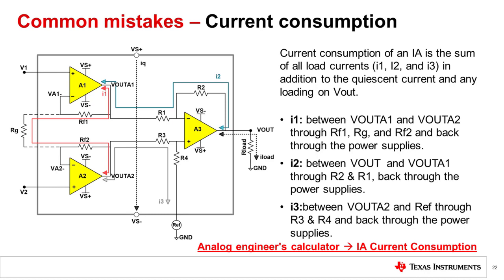Here is a diagram of all the currents in a typical 3-amp IA. Current I1 is the current flowing between Vout1 and Vout2 through RF1, RG, RF2, and back through the power supplies. Current I2 is the current flowing between Vout and Vout A1 through R2 and R1 and back through the power supplies. Current I3 is the current flowing between Vout A2 and reference through R3 and R4 and back through the power supplies. Make sure to account for all these currents when managing your power budget. You may do this in a calculator tool called IA current consumption housed in the analog engineer's calculator.